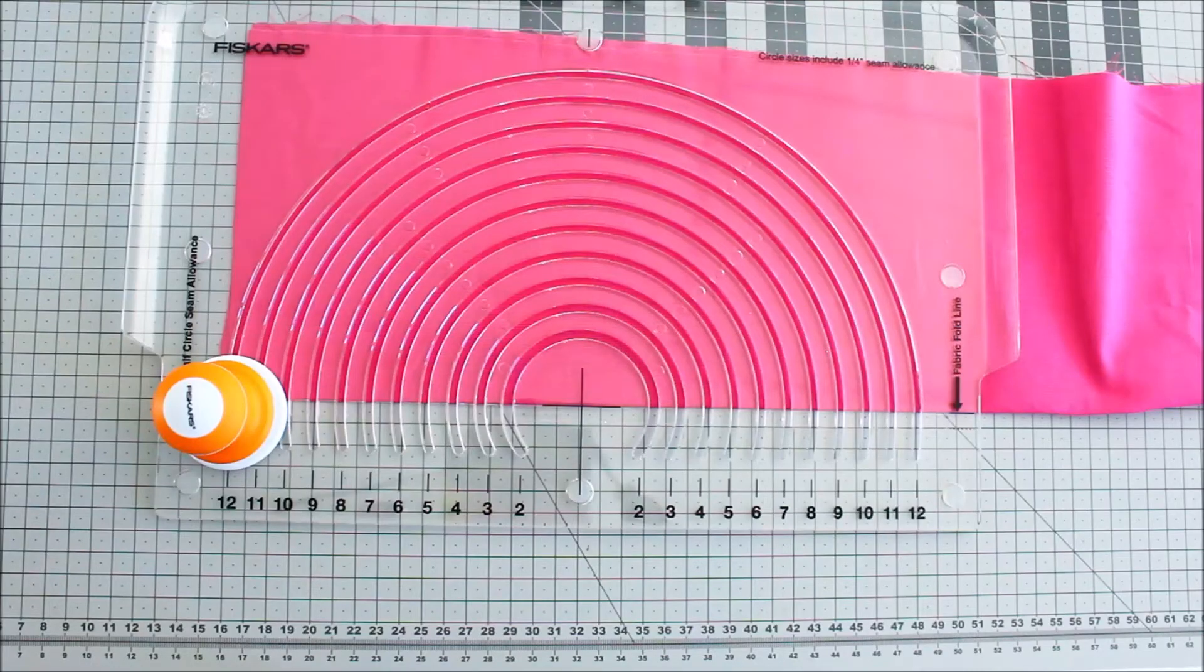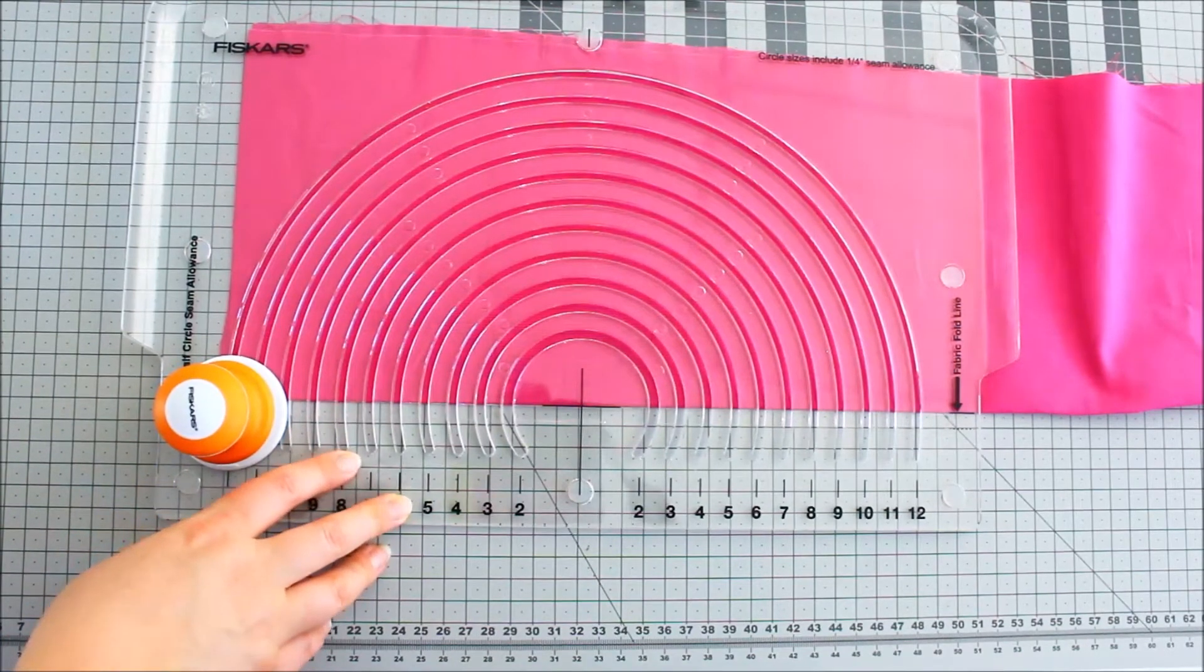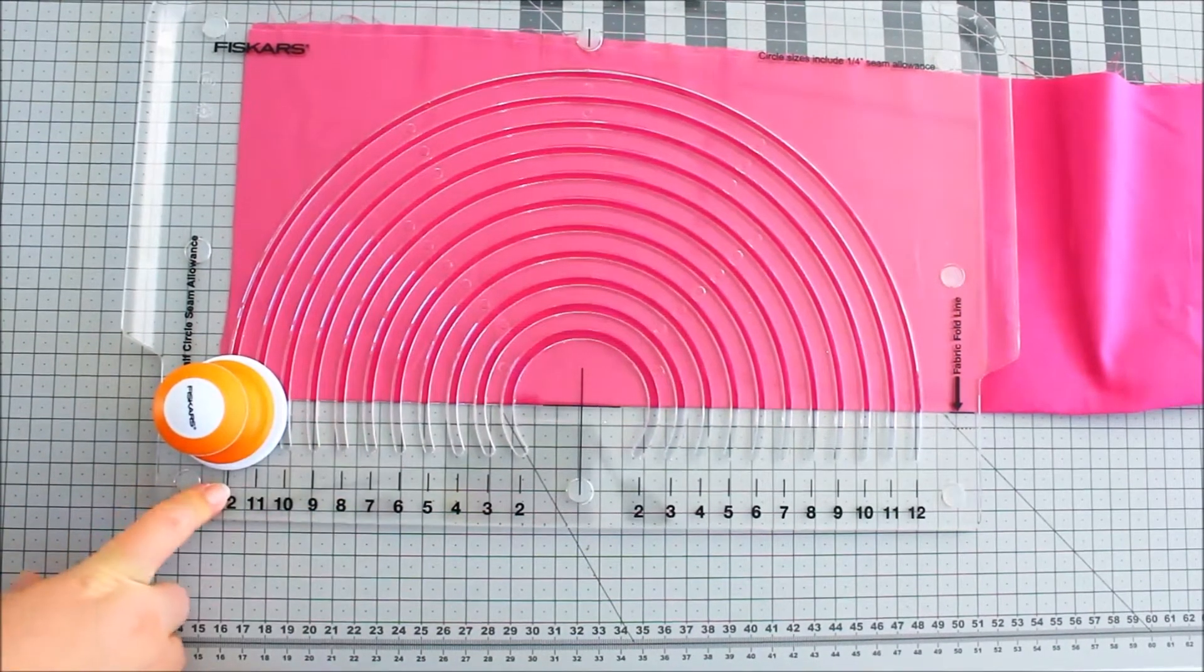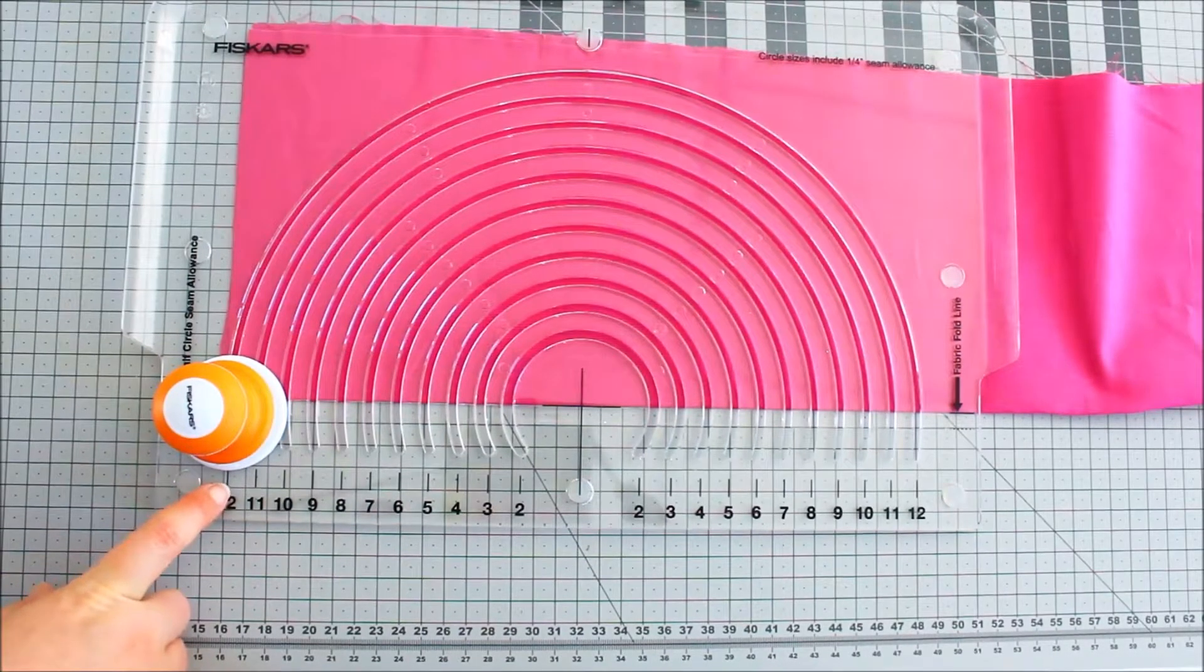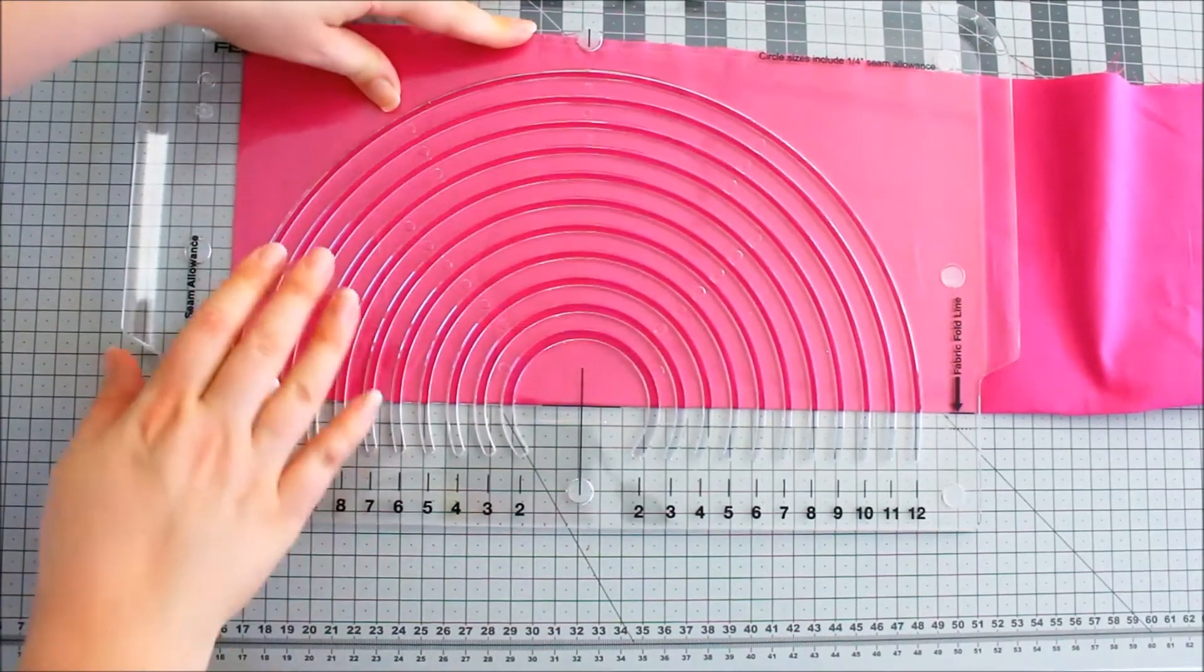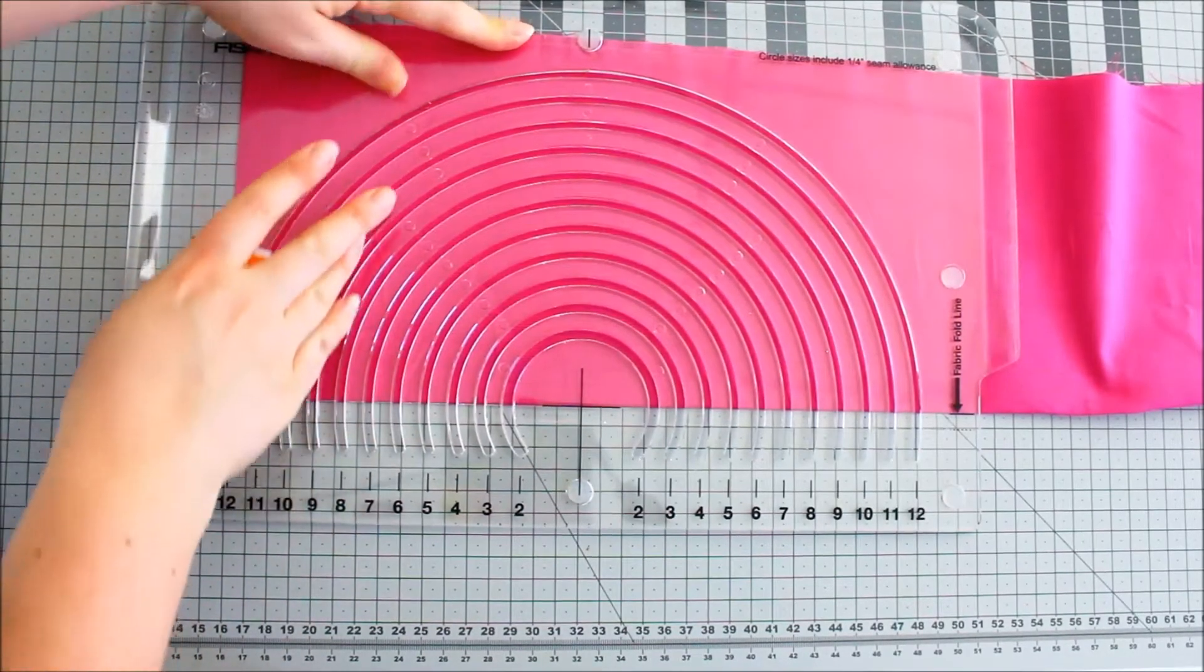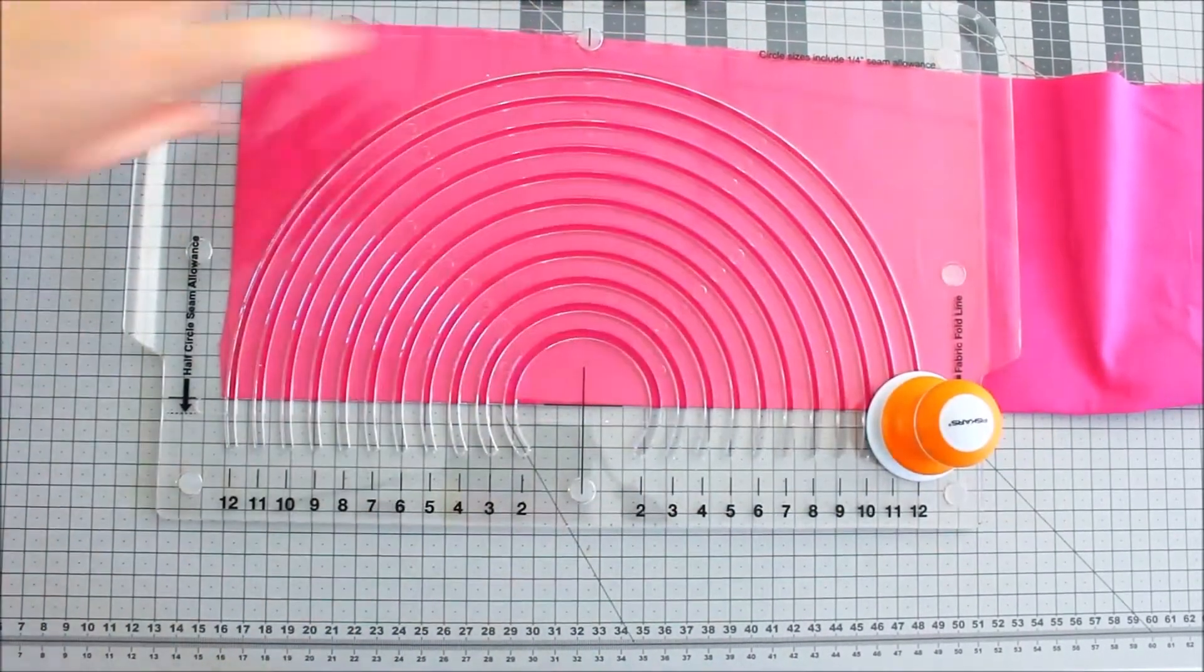So what we're going to do first is to cut out our petals. I'm going to use this circle cutter by Fiskars just to make life really easy for myself. I'm going to cut it out on the largest size, which is 12 inches. But if you wanted to do bigger or smaller than that, then by all means you can scale it up or down. So all we need to do is just to hold it still, push down, and we've got our circle cut out.